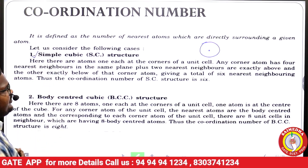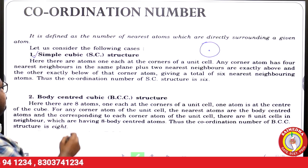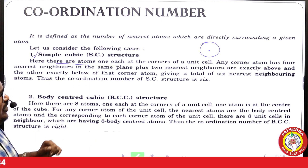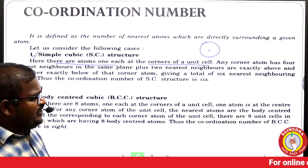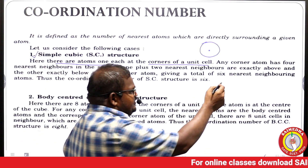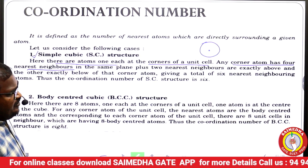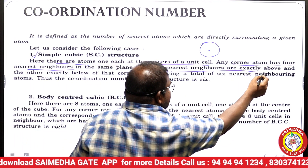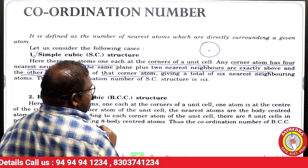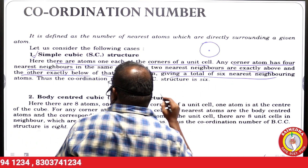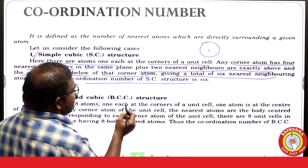In simple cubic structure, there are atoms at each corner of the unit cell. Any corner atom has four nearest neighbors in the same plane, plus two nearest neighbors — one exactly above and one exactly below that corner atom — giving a total of six nearest neighboring atoms. Thus, the coordination number of simple cubic structure is six.